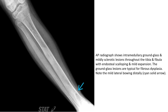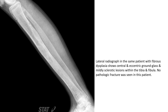Note the mild lateral bowing distally. Lateral radiographs in the same patient with fibrous dysplasia show central and eccentric ground glass and mildly sclerotic lesions within the tibia and fibula. No pathological fracture was seen in this patient.